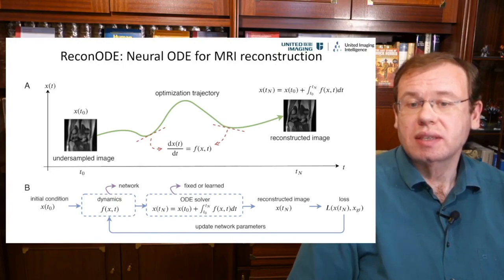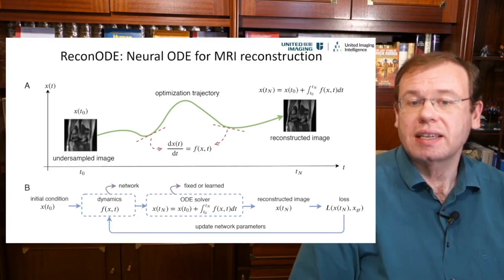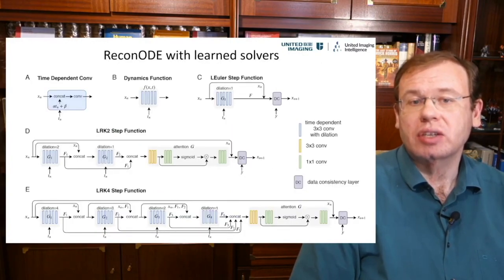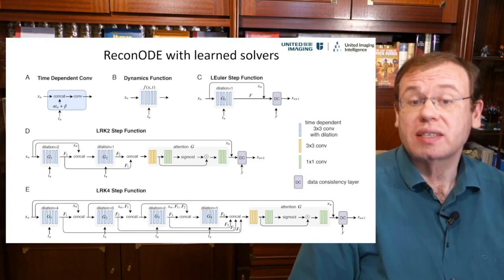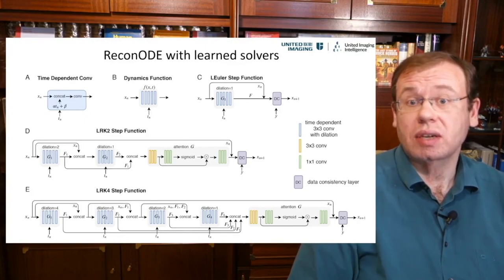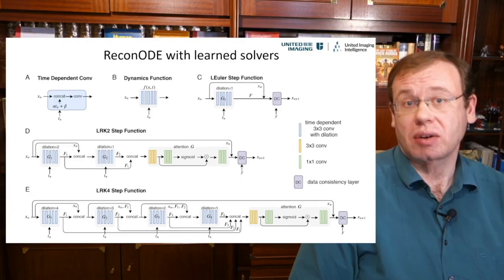You have an initial condition — the undersampled image — and then you estimate the dynamics and the ODE solver in a completely trainable way to construct the reconstructed image. They also suggest different network architectures, from time-dependent convolutions to sophisticated update schemes that learn the optimization algorithm. Since I really enjoy embedding known operators into networks, I enjoyed reading this paper, and they presented evaluations of different strategies in the full paper. I recommend having a look.